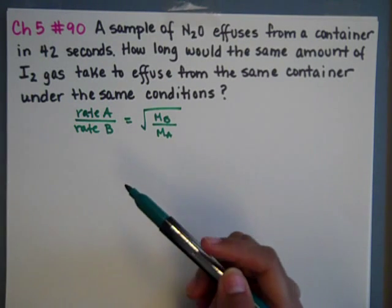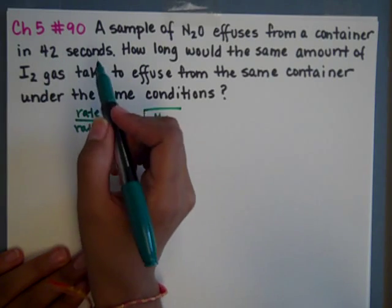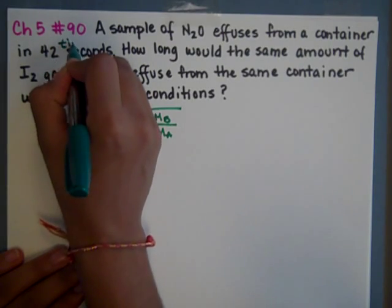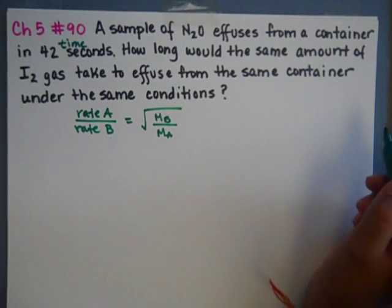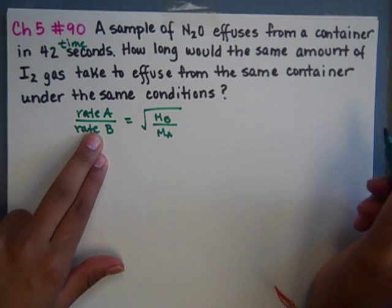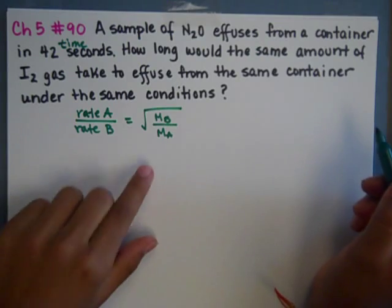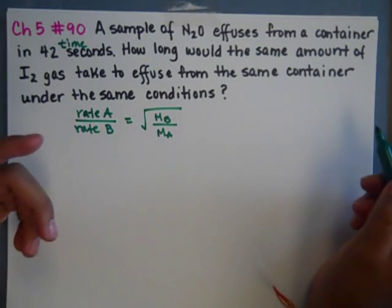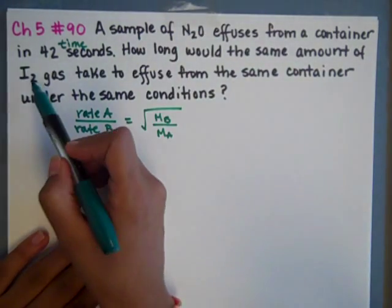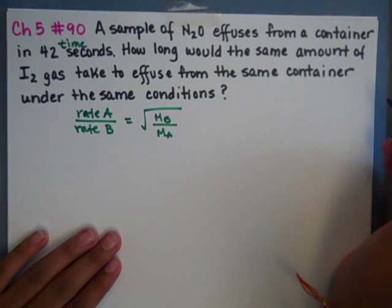The first thing to remember is that we were given 42 seconds, which is a unit of time. That's not a rate exactly. So we have to make the unit of time into a rate, and we're trying to find time for the second one. So we have to just be careful with our units on this side. The molar masses are pretty straightforward. We know it's N2O and I2, so we can go ahead and calculate those.